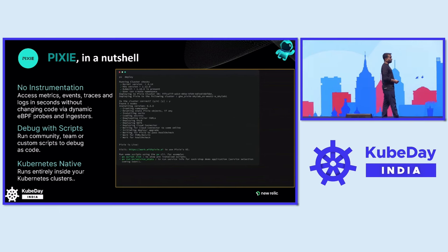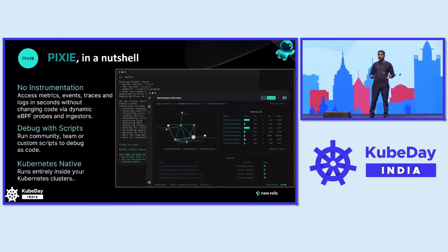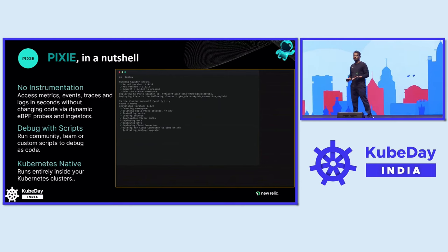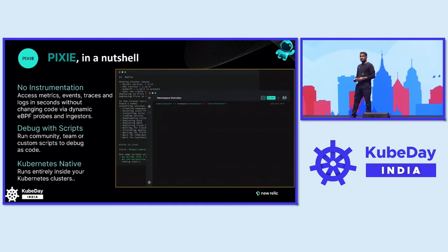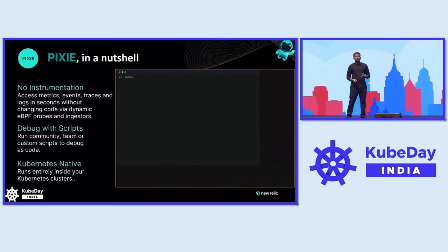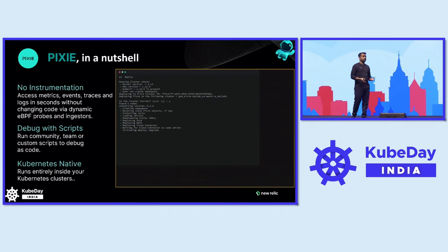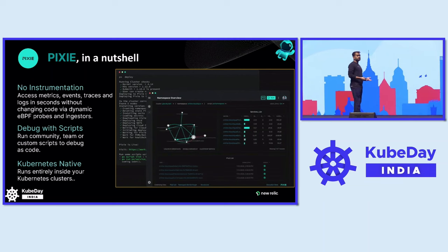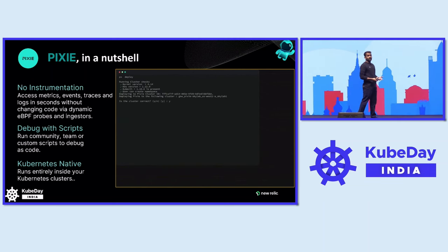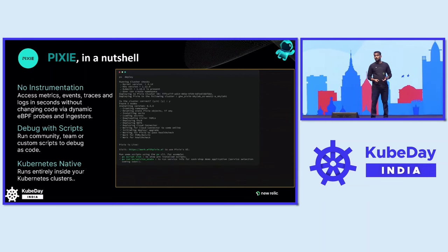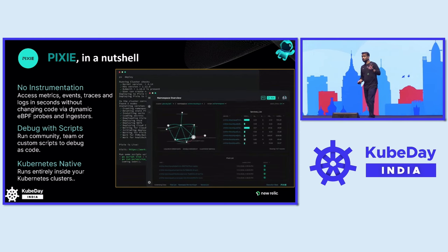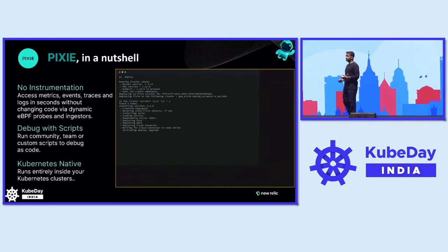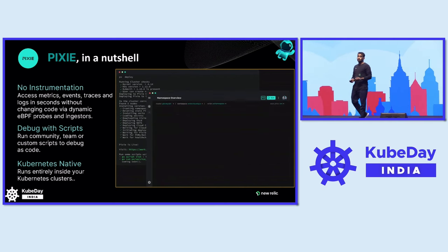Pixie captures all your telemetry data without having to do any manual instrumentation. It uses eBPF under the hood to capture all your telemetry data, like network and resource metrics, your HTTP requests, application profiling, and much more. And installing Pixie takes only five minutes — all you have to do is run px deploy on your cluster, and you are good to go.